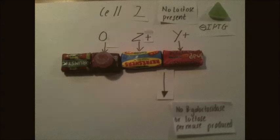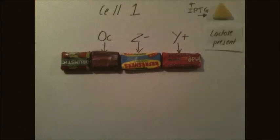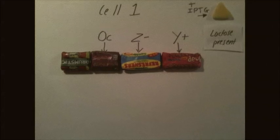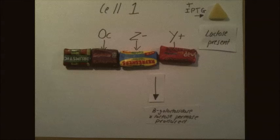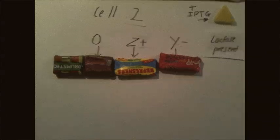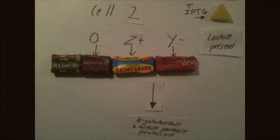This means no beta-galactosidase or lactose permease is produced in Cell 2. In Cell 1, no lactose is present, yet beta-galactosidase and permease are still produced due to the operator mutation.